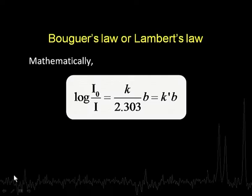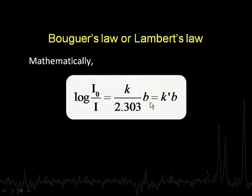What actually happens is: with 100 units incident, 90 comes out after the first centimeter. In the second centimeter, 90 units are incident and 10 percent of 90 is 9, so 81 comes out. That is the meaning of exponential variation. Mathematically, this is expressed as: log(I₀/I) = K'B, where I₀ is the intensity of incident radiation, I is the transmitted intensity, B is the thickness of the absorbing medium, and K' is a proportionality constant. This is the mathematical expression for Lambert's law.